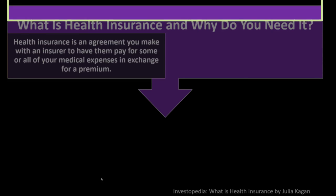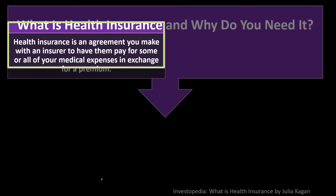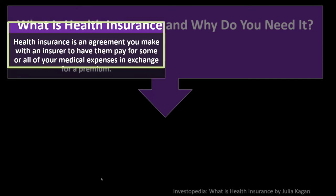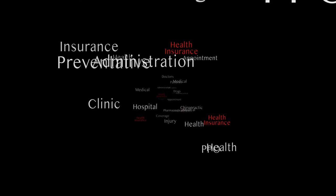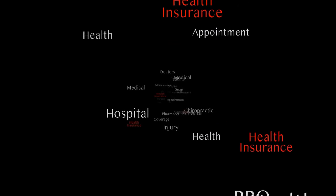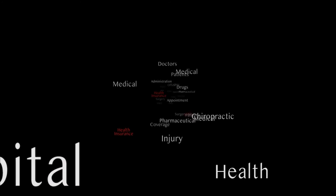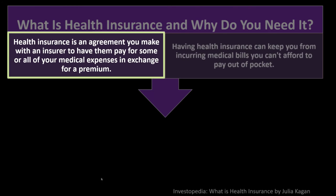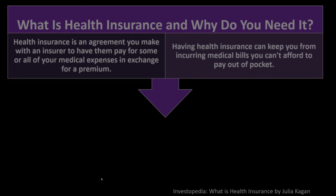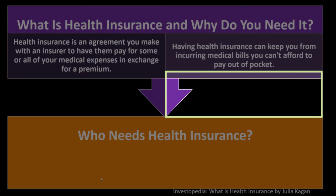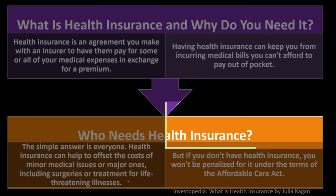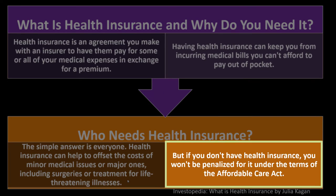What is health insurance and why do we need it? Health insurance is an agreement with an insurer to have them pay some or all of your medical expenses in exchange for a premium. It can be more complex than other insurance because we're not just insuring against a financial catastrophe but also potentially covering preventative care, which makes it more complex to determine which insurance is best for our particular situation. Having health insurance can keep you from incurring medical bills you can't afford. The simple answer to who needs it is: everyone.